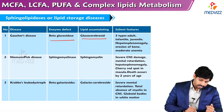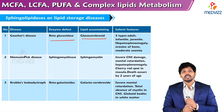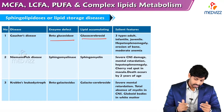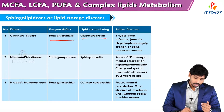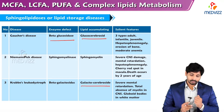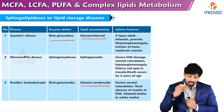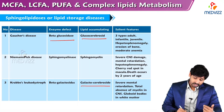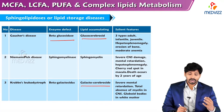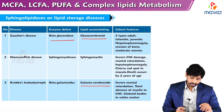The third is Krabbe's Leukodystrophy, caused by deficiency of the enzyme beta-galactosidase. The accumulated product is galactocerebroside. The main features are severe mental retardation, total absence of myelin in the central nervous system, and globoid bodies in white matter.